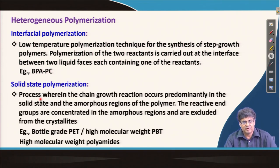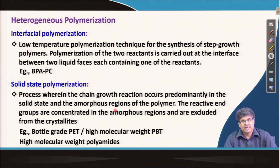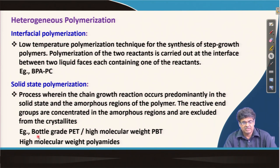In solid state polymerization, chain growth occurs predominantly in the solid state within the amorphous region of the polymer. The reactive end groups are concentrated in the amorphous region and excluded from the crystallites. Chain growth happens where the active chain end belongs to the amorphous region, while the other part of the chain belongs to crystallites. Examples include bottle-grade polyethylene terephthalate, polybutylene terephthalate, high-molecular-weight polyamides, and so on.